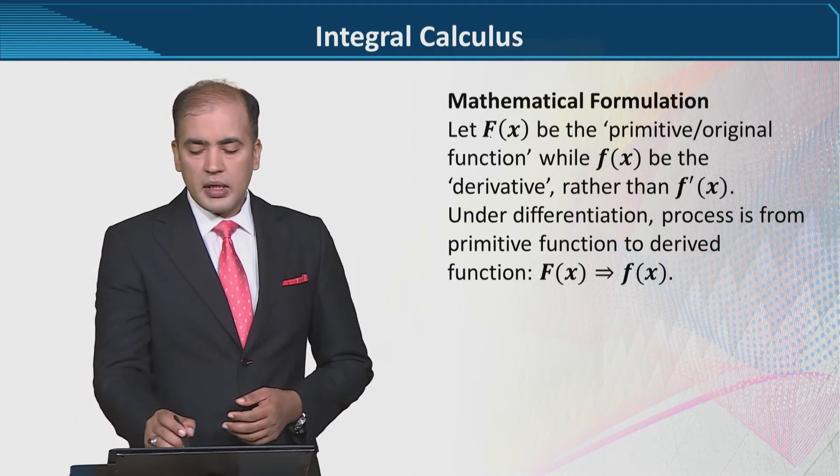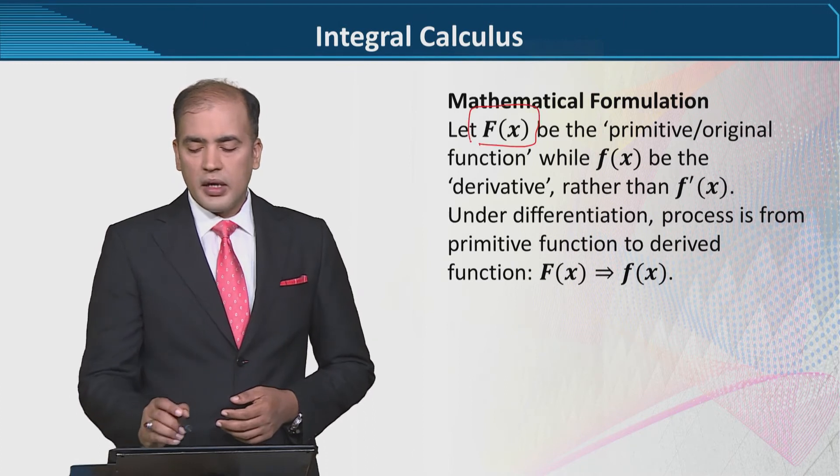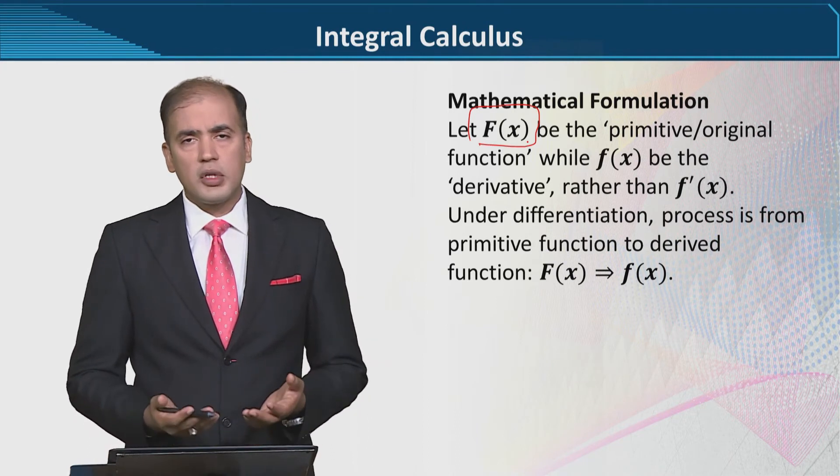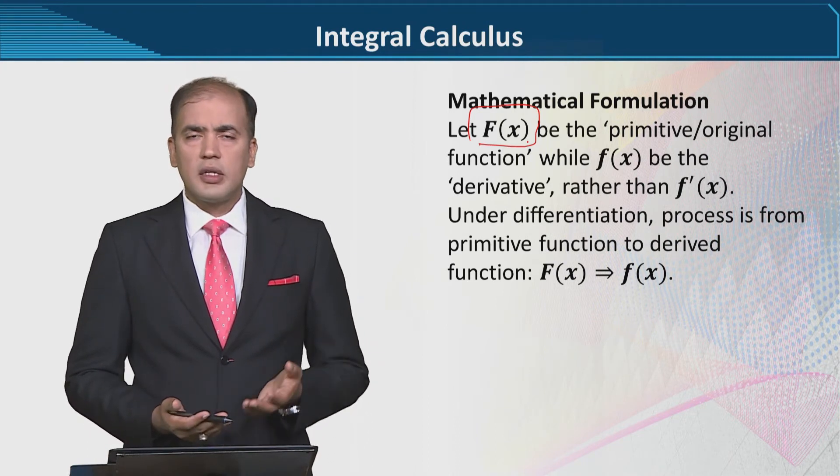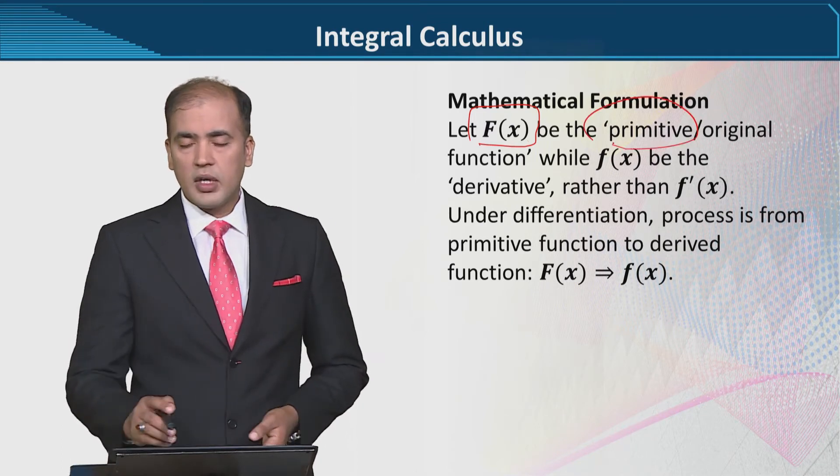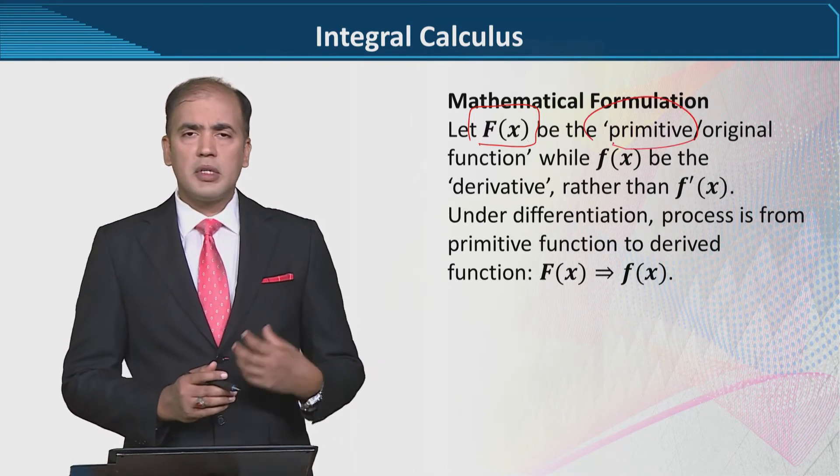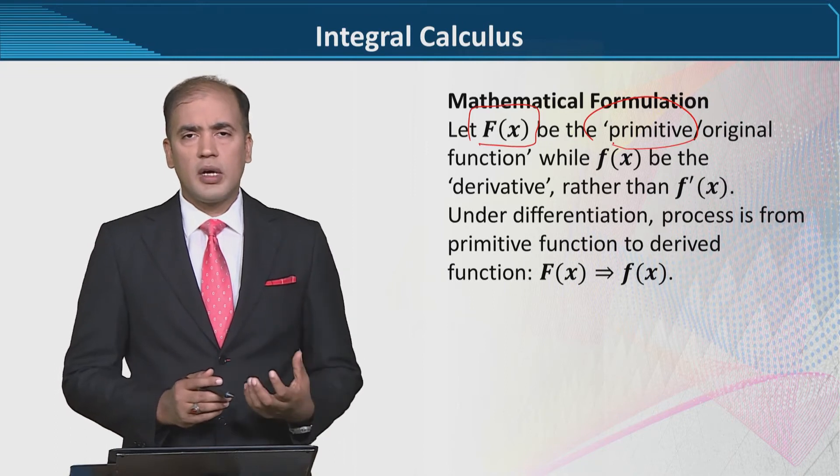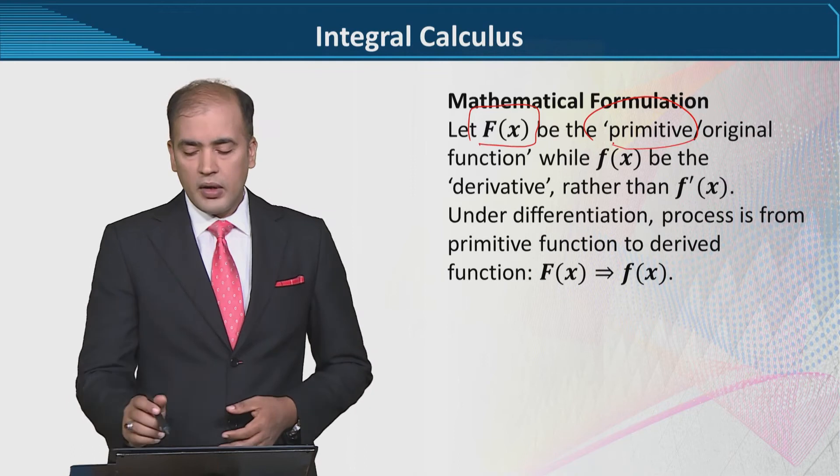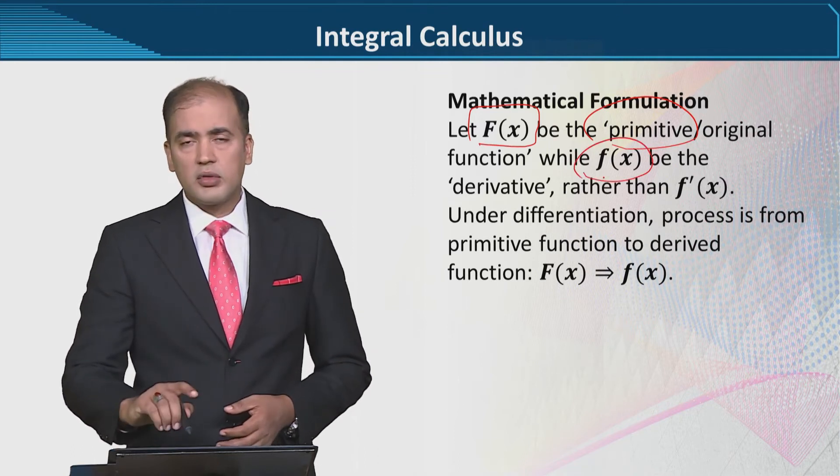Mathematically karain hum dekhen. To isko hum represent karte hain using these functional notations. Yahan par jo capital F(x) likha hua hai, isse matlab hai original function ya total function ya jis ka most suitable naam hai primitive. Isse primitive isse liye kehate hain kyunke primitive se matlab qadeem hota hai. Yani ki jo bilkul shuru mein tha. Either isse ka matlab ye ki jo bilkul original function tha. Or small f(x) hum use karte hain uske derivative ke liye.